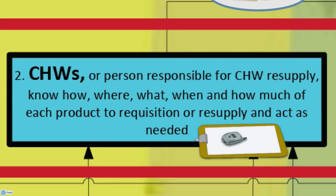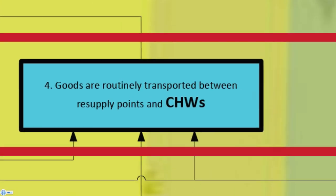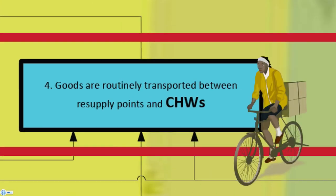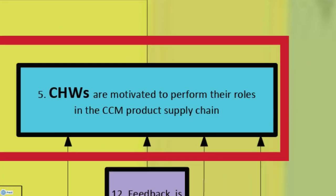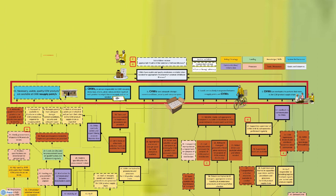The remaining preconditions were: CHWs, or persons responsible for CHW resupply, know how, where, what, when, and how much of each product to requisition or resupply and act as needed; CHWs have adequate storage, correct conditions, security, and adequate space; goods are routinely transported between resupply points and CHWs; and CHWs are motivated to perform their roles in the CCM product supply chain. Each of these five preconditions marks a pathway that shows the steps that need to be in place to reach the major precondition.